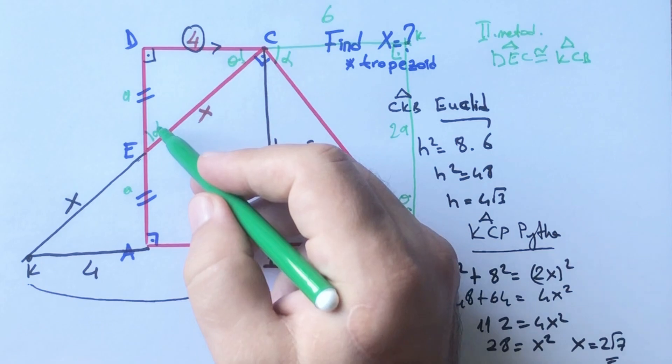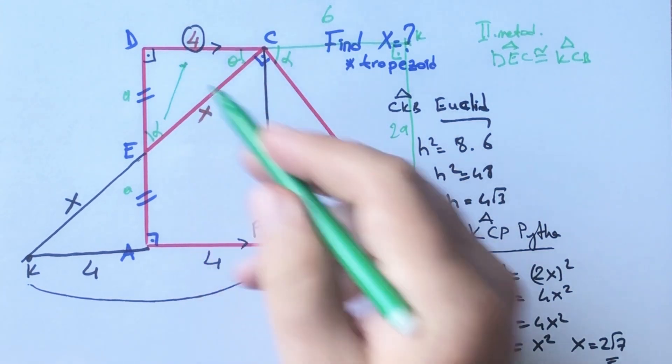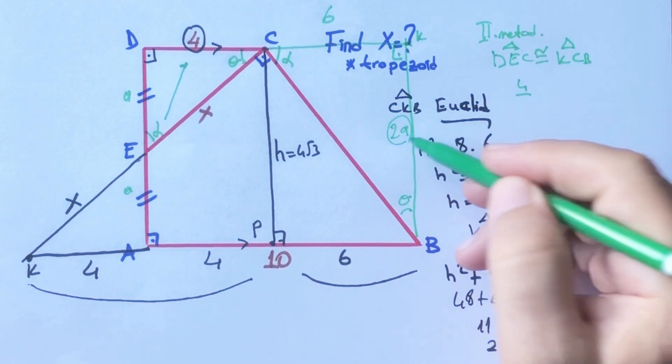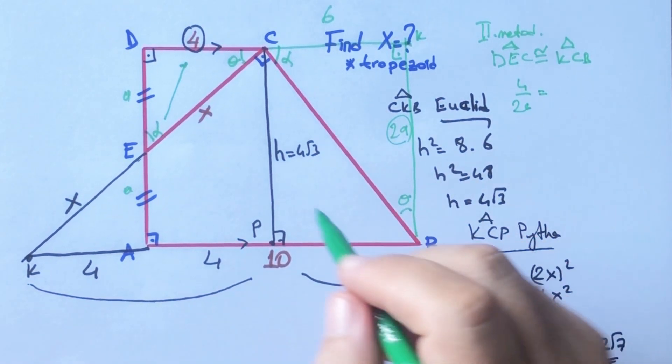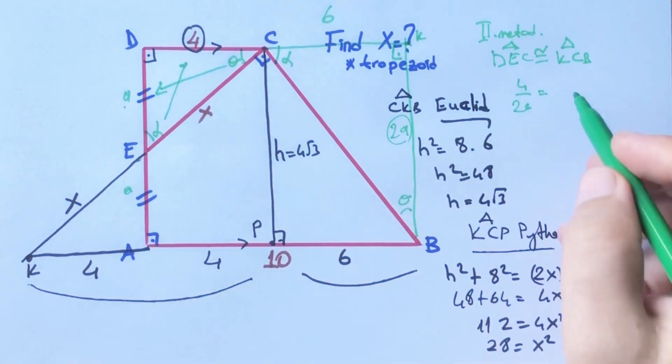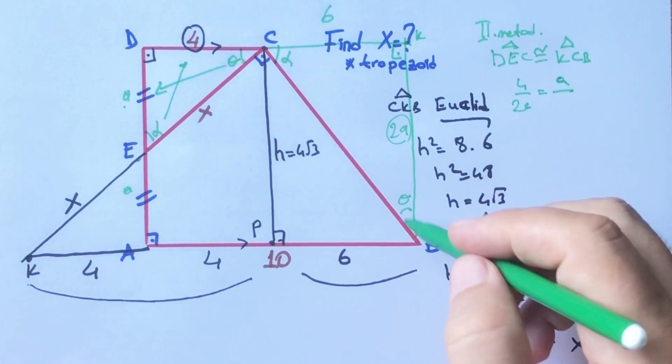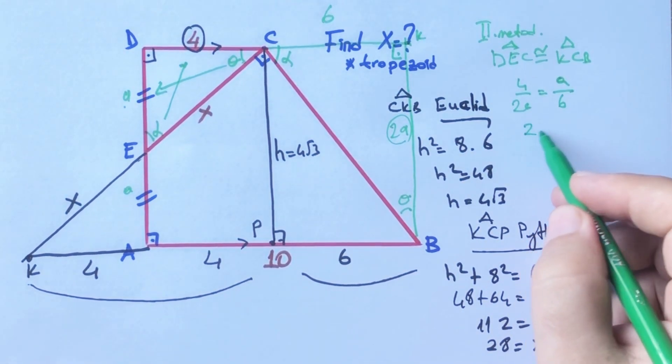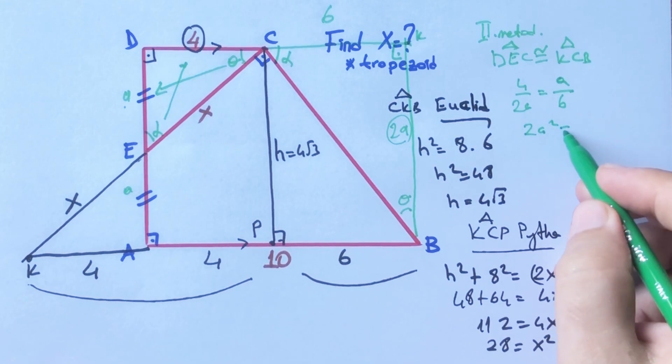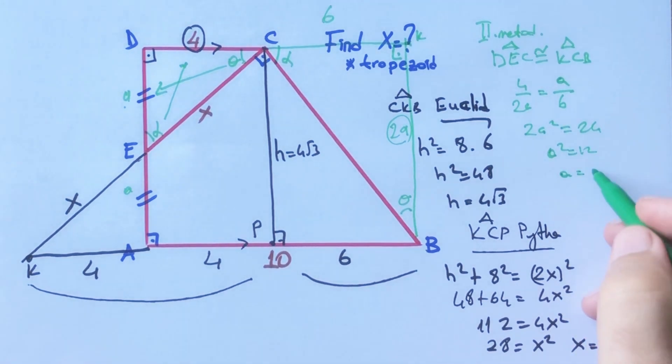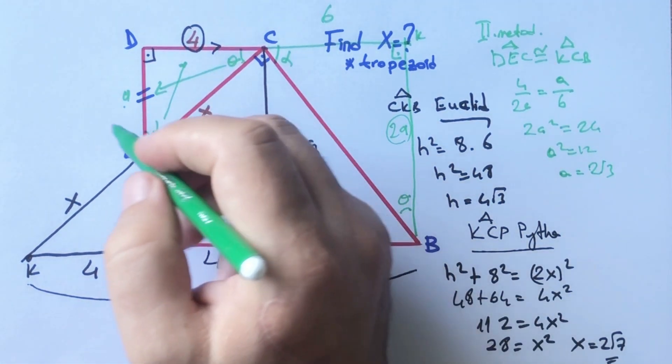Therefore, 4 which is opposite of the alpha over 2a which is opposite of the alpha equals a which is opposite of the theta over 6 which is opposite of the theta. Therefore a is going to be 2√3 units.